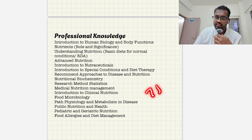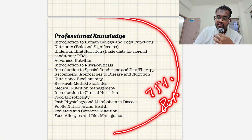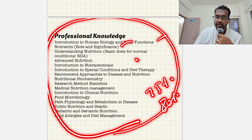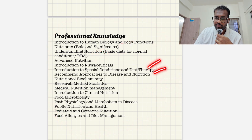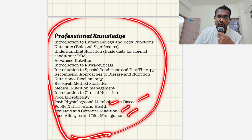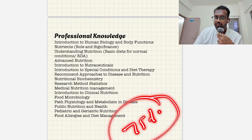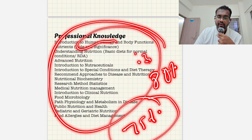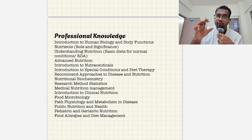Now comes the main topic, which carries around 75 percent of the syllabus — AIIMS can sometimes make it 80 percent. You need to focus here. The main professional syllabus includes: introduction to biology, body functions, nutrient roles, understanding of nutrients, advanced nutrition, introduction to nutraceuticals, special conditions and diet therapy, recommended approaches to diseases and nutrition, nutritional biochemistry, research methodology and statistics, medical nutrition management, clinical nutrition, food microbiology, pathophysiology and metabolic diseases, public nutrition, pediatric and geriatric nutrition, and food allergies and diet management.